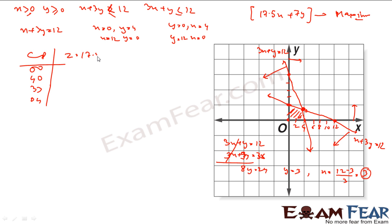For these points, let us find Z, that is 17.5X plus 7Y. In this case you will get 0. Second case you will get 17.5 times 4 is 70. Here you will get 73.5 and here you will get 28. You want to maximize the profit, so we will go for this.